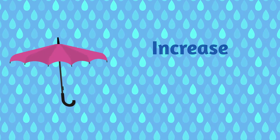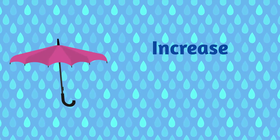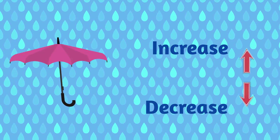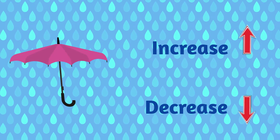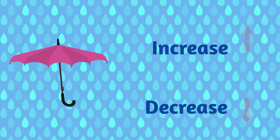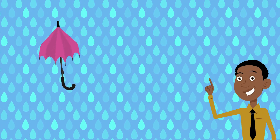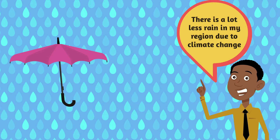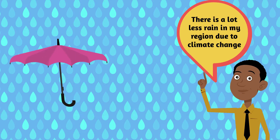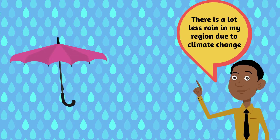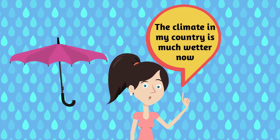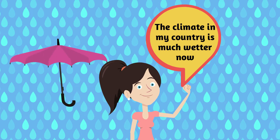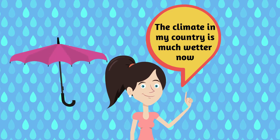When we talk about rainfall and climate change, it's important to note that a climate may experience an increase or a decrease in rainfall. Someone in one part of the world may say there is a lot less rain in my region due to climate change, and in a different part say the climate in my country is much wetter now.